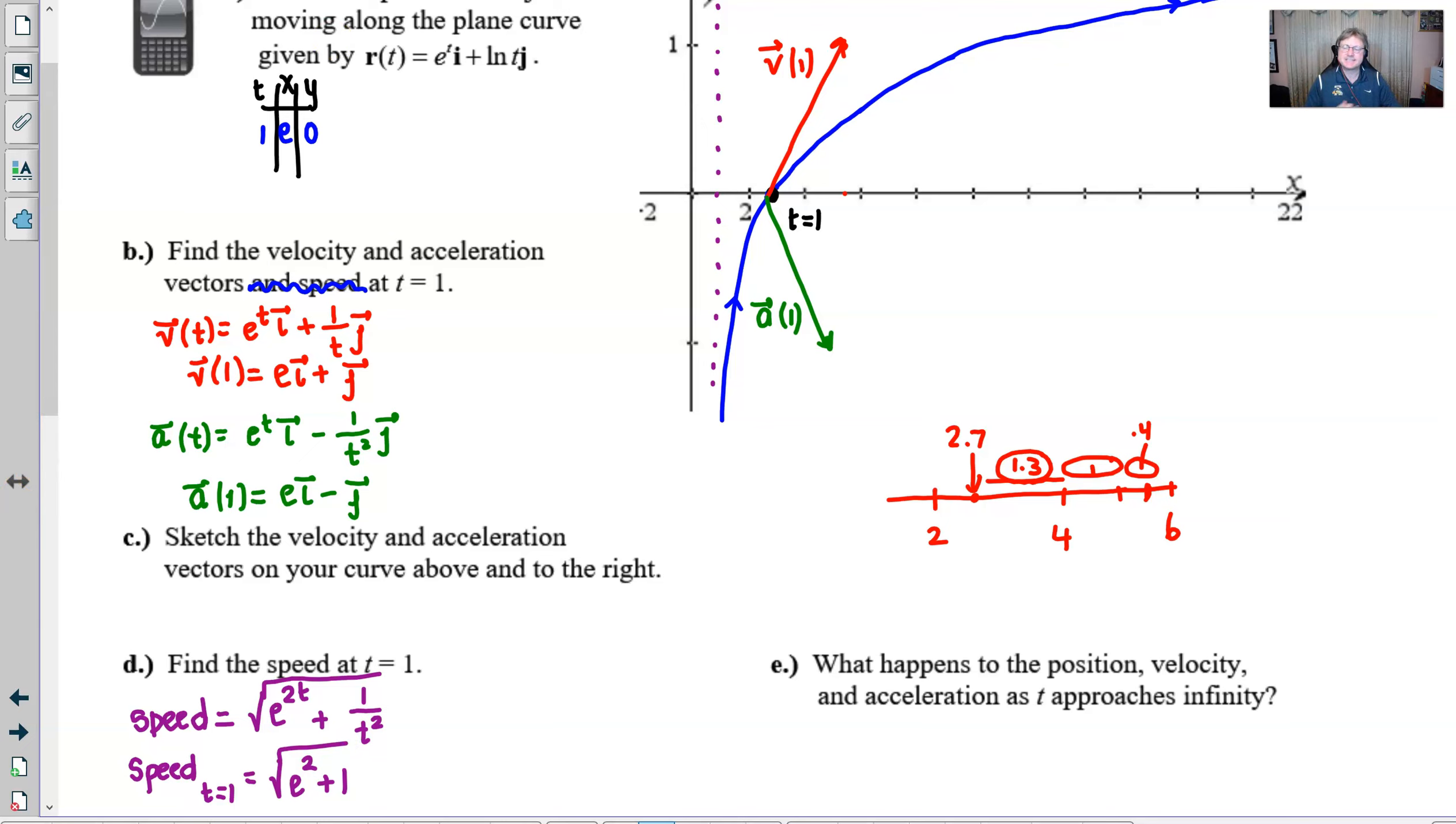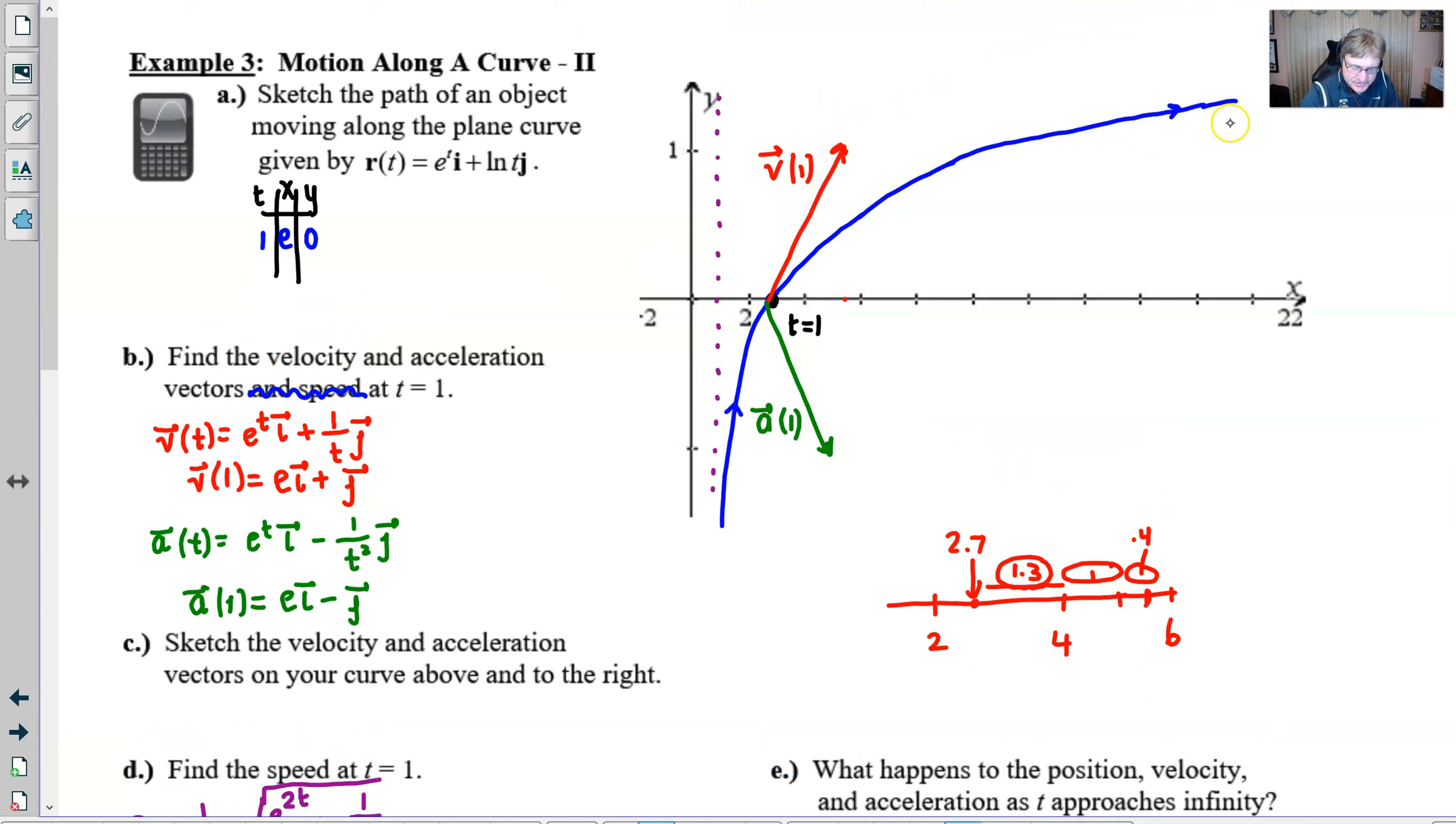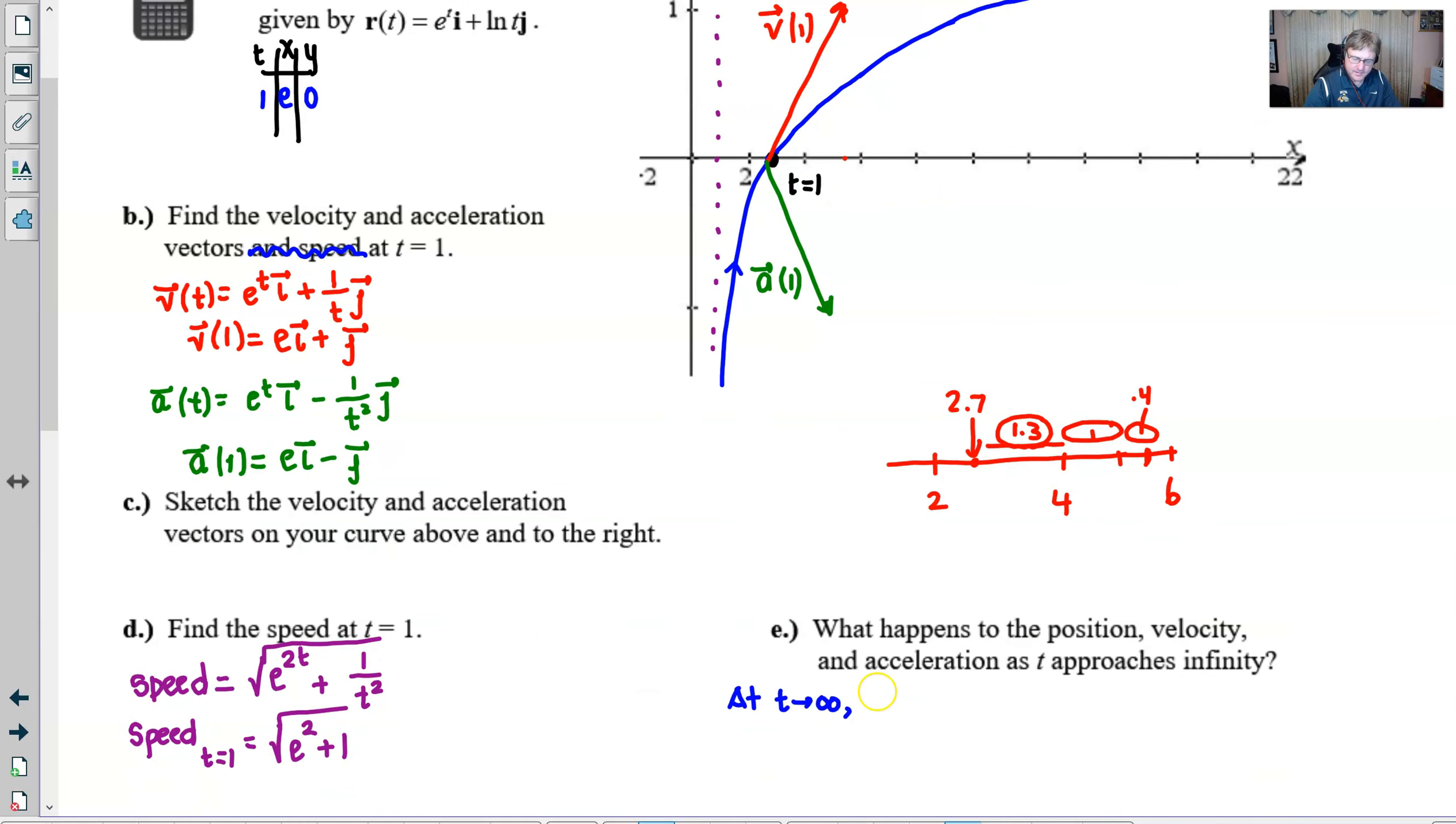Part E: what's happening to the position, velocity, and acceleration as t approaches infinity? Let's think about position. As t approaches infinity, the x value of the position is certainly getting larger, but as I indicated before, the y is getting larger as well. So we can say both the x and y components or the x and y values are increasing.